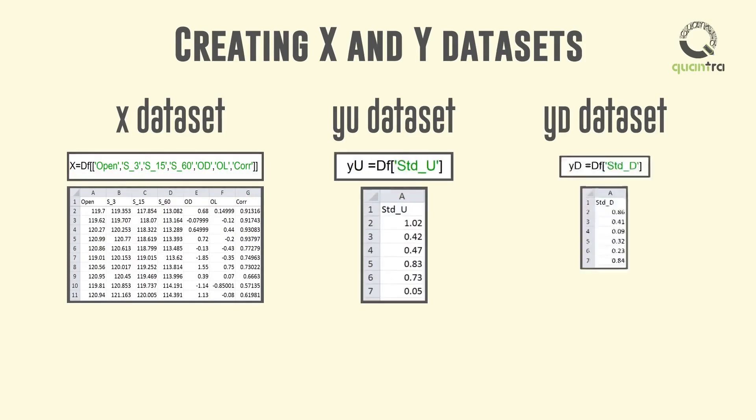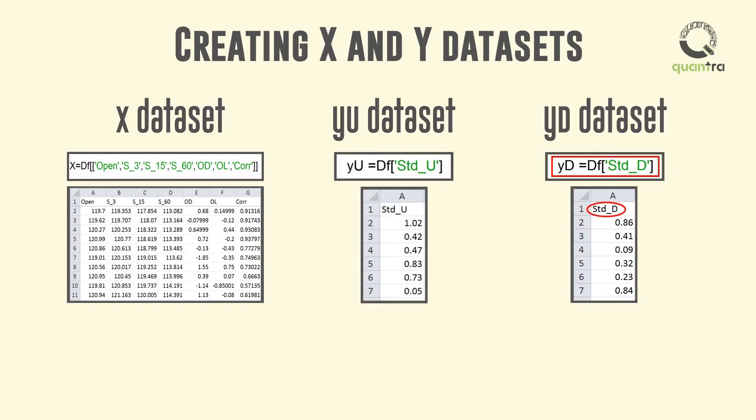YU and YD are vectors storing the values under the headers STD_U and STD_D in the data frame DF respectively, which have been defined earlier.